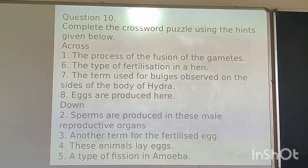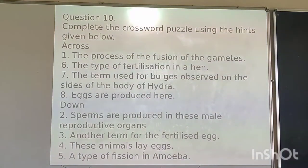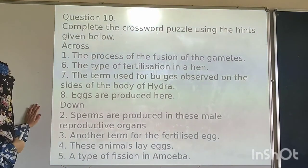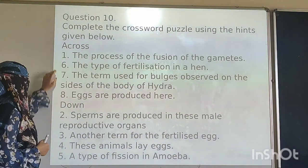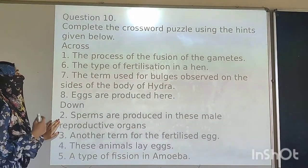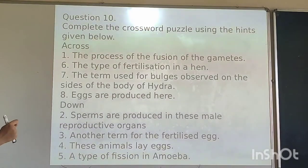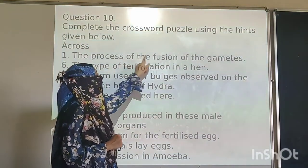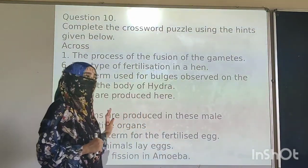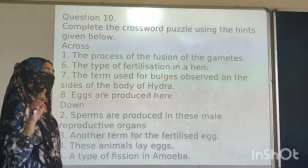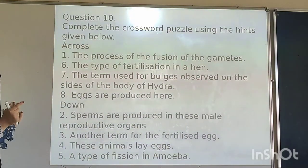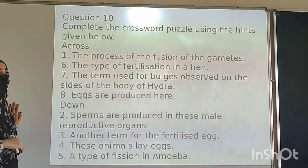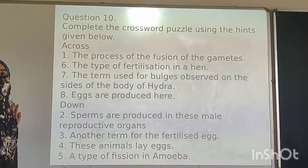Let's begin with the next one: complete the crossword puzzle using the clues across and down. Here is the first clue: the process of the fusion of the gametes. Can you tell me the answer? You have 5 seconds to answer, then I will move to the puzzle. Your time starts now.